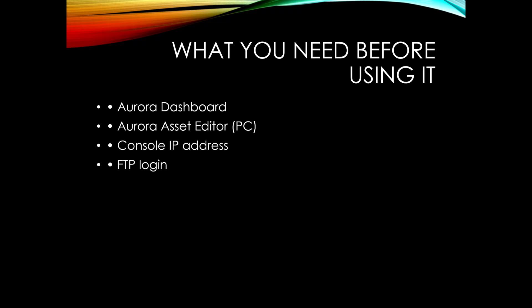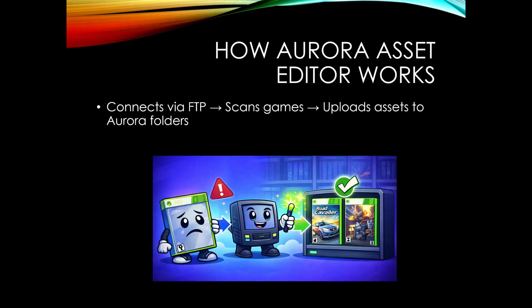To use this application, as demonstrated in previous videos, you need Aurora installed on your console, Aurora Asset Editor on your PC, your console's IP address, and your FTP username and password, which you can find through the options in your Aurora dashboard. The tool connects to your console via FTP, scans your game library, and uploads assets directly into Aurora's folder.